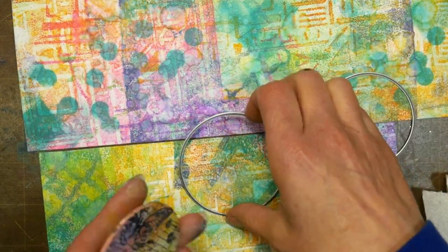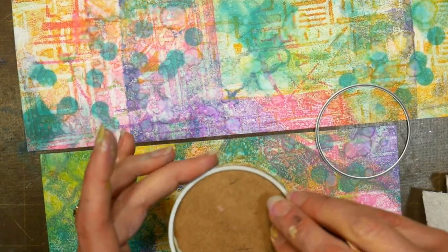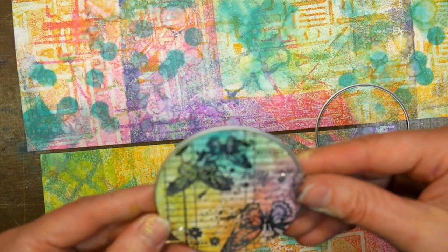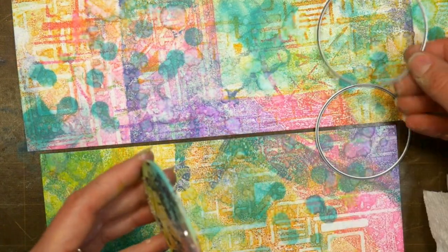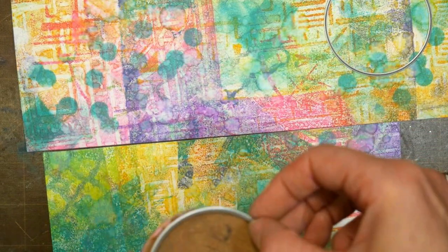After that dries we're going to cut it into circles. I was trying to figure out if I wanted the circles to go all the way to the edge on the back or if I wanted them a little bit smaller, and I decided I would go a little bit smaller.